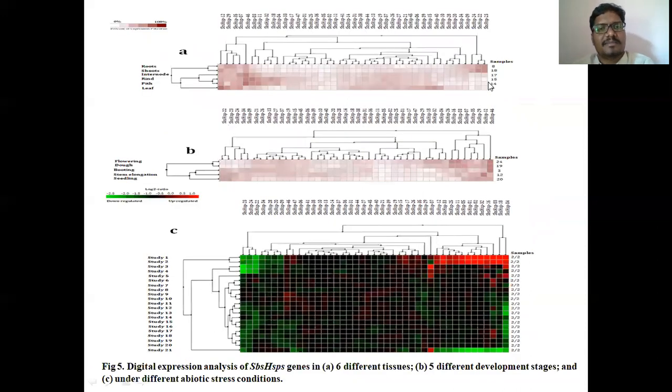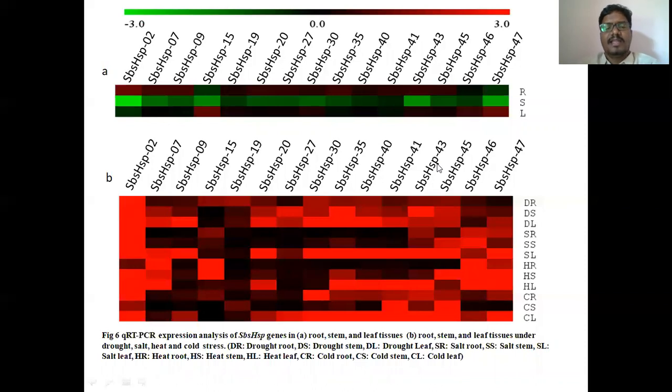And this slide represents the digital expression of all the heat shock proteins. We have done with the help of Genevestigator, wherein we identified some genes are highly expressed and some genes have very low-level expression. And similarly, this is the tissue-specific expression level and this is the developmental level.